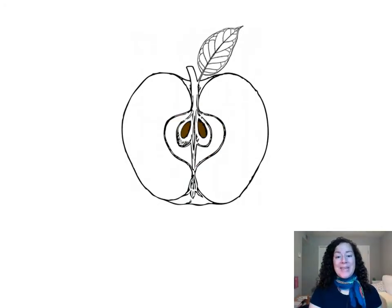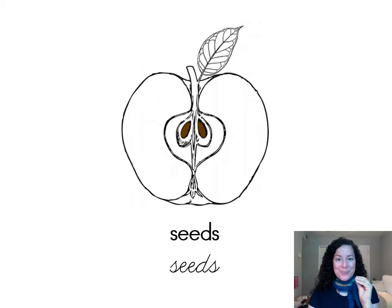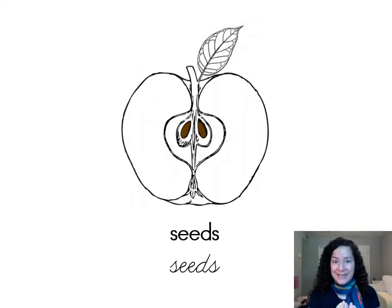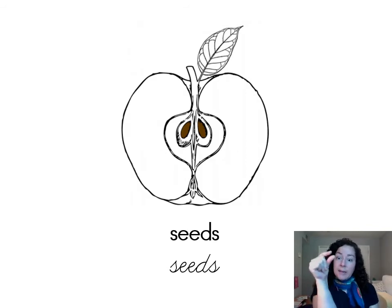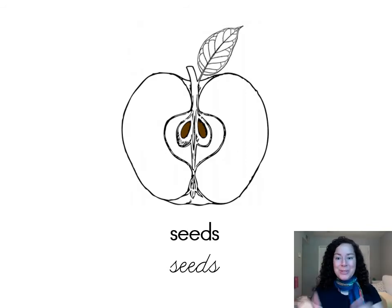Now, inside the fruit is the seed, and the seed is the grain of a plant that has the power inside it to make a new plant.